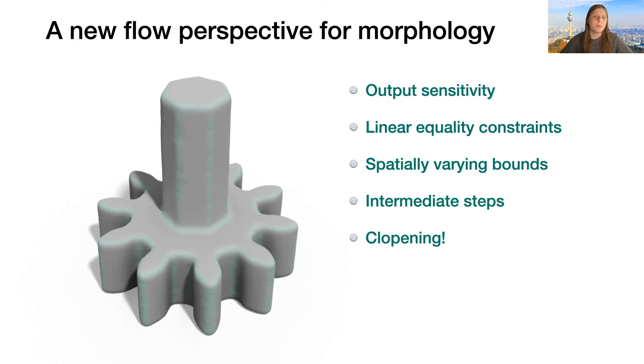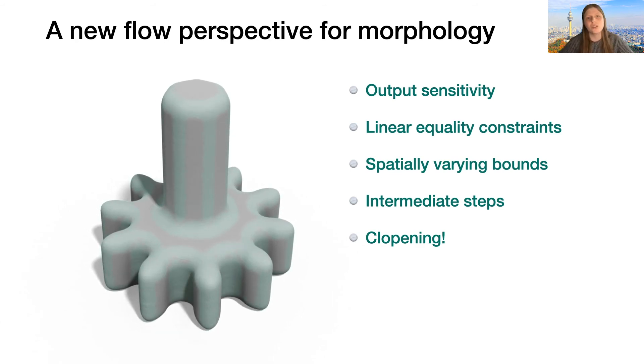Finally, we can even combine our opening and closing flow into a new smoothing flow, which we call the clopening, and which cannot be replicated by any composition of traditional morphological operations that we know of. These are only some of the benefits of this new perspective, and we are really excited to present this work to the geometry processing community and see what others can make use of it.